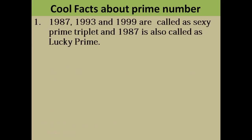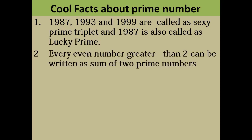1987, 1993, and 1999 are called a sexy prime triplet, and 1987 is also called a lucky prime. Also, every even number greater than 2 can be written as a sum of 2 prime numbers.